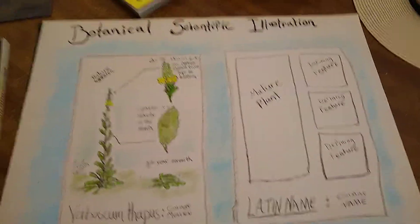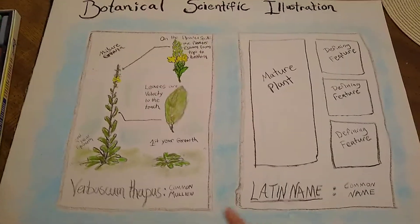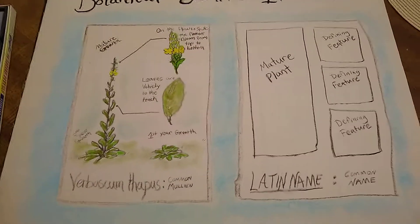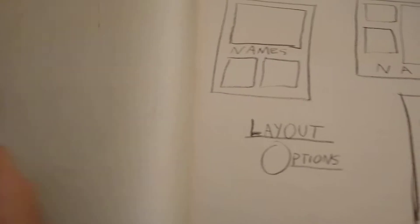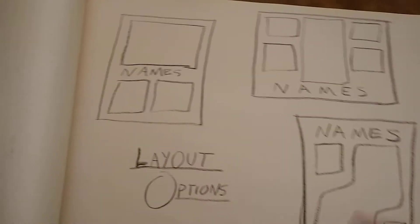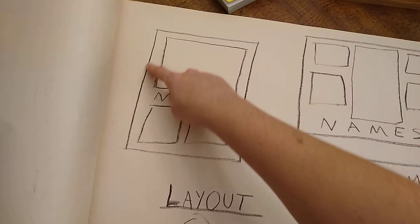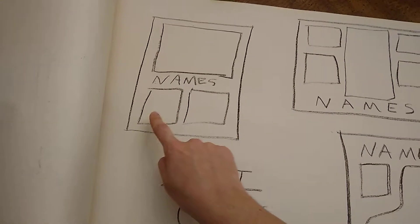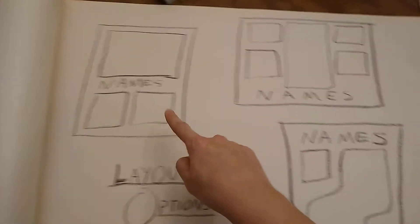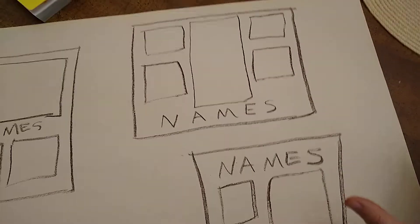But when you draw yours, you don't have to do this exact layout that I have here. You can put your plant main picture up here. Perhaps the name's in the middle. Your distinguishing features on the bottom.